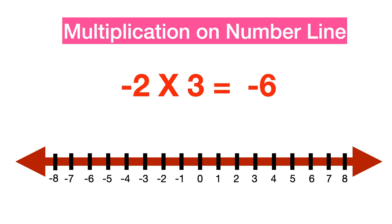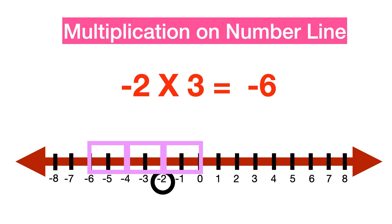To multiply minus 2 by 3, solve this problem by starting from the origin and moving minus 2 steps 3 times. Minus 6 is the correct answer.